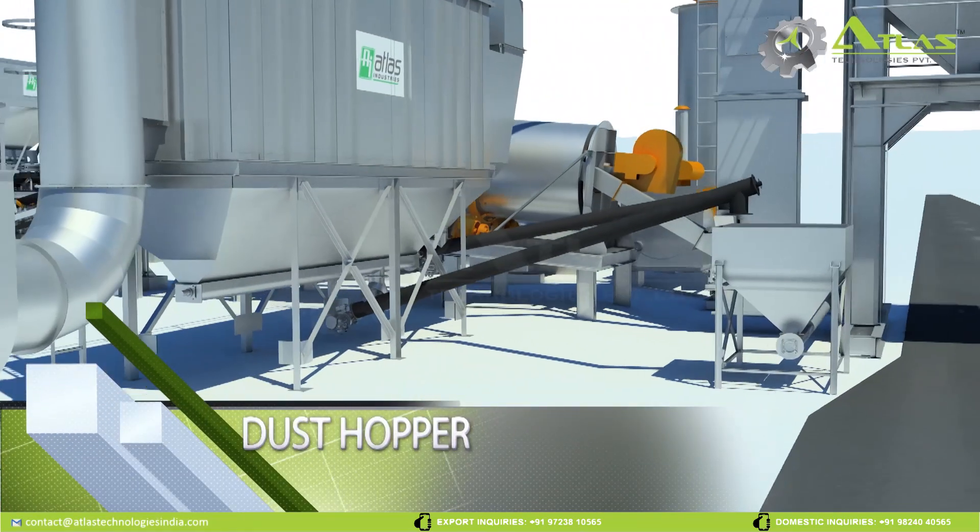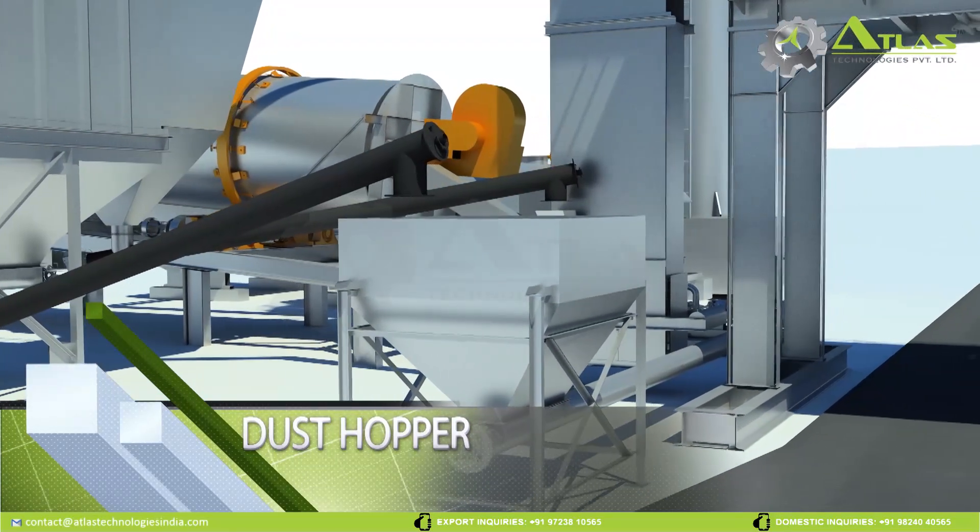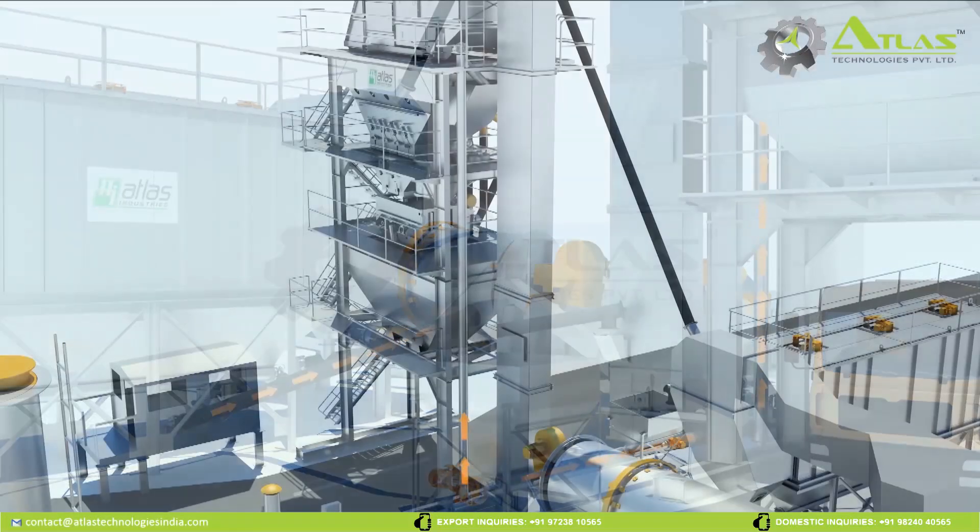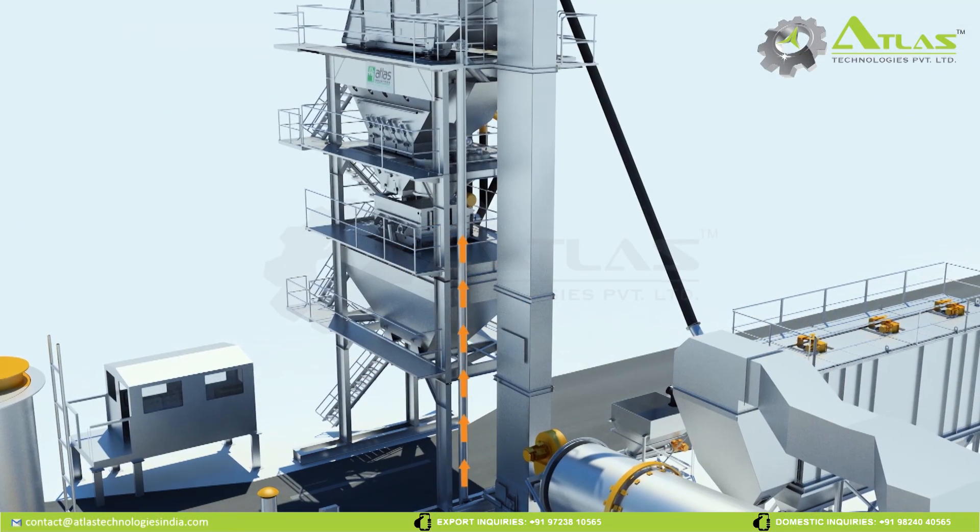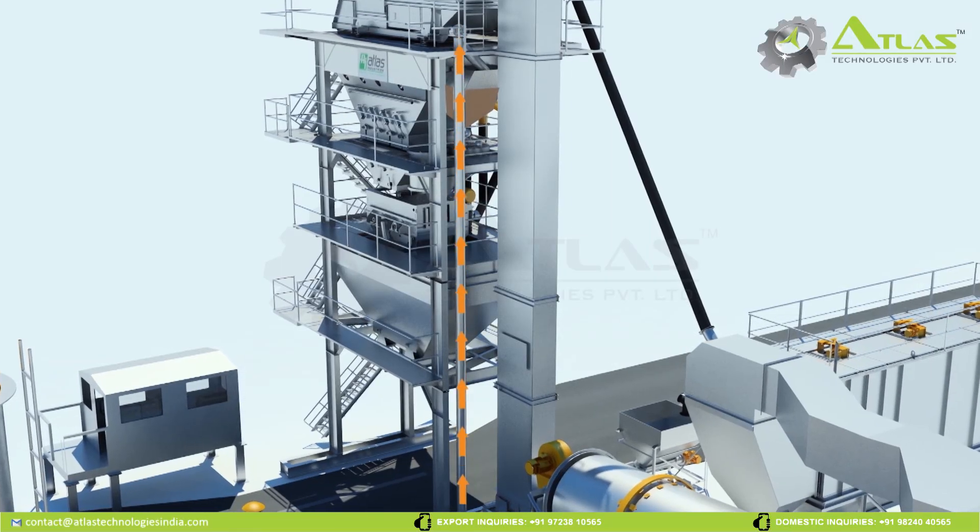Dust Hopper. All the dust collected from bag house is accumulated in the dust hopper. Dust from external sources can also be added to dust hopper. This collected dust is transferred to the dust storage hopper mounted on tower via screw conveyor.